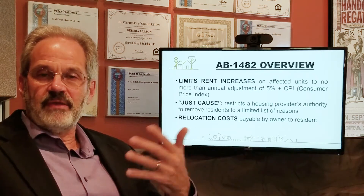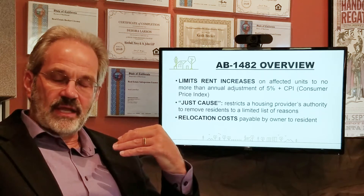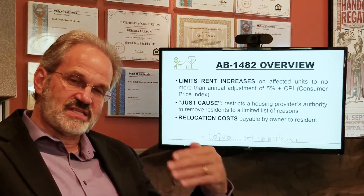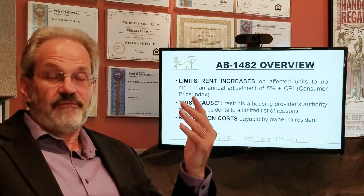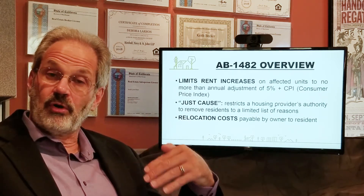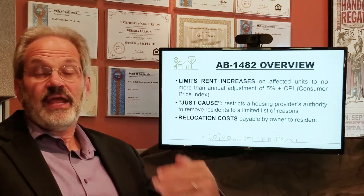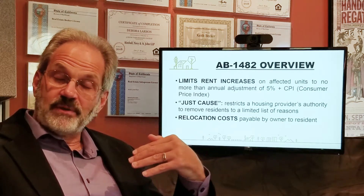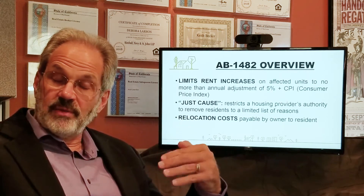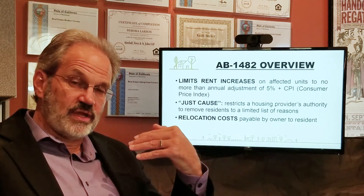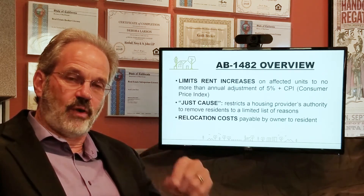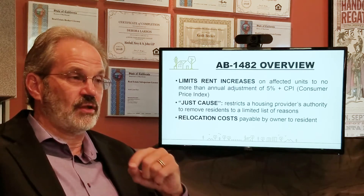As an overview, AB 1482 is a rent control law. It limits the amount of rent increases to no more than 5% plus CPI. And if CPI exceeds 5% itself, there's a hard cap of no more than 10% annually. In some instances, properties under AB 1482 have a limited number of reasons where you can require a tenant to vacate, and in some of those instances you may be required to provide relocation costs.